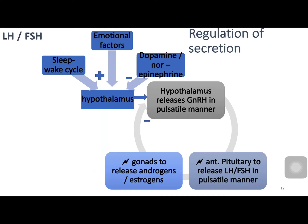Now coming to gonadotropins. Gonadotropins released from the anterior pituitary are two: luteinizing hormone and follicle stimulating hormone. These are polypeptides released from gonadotrophs. Emotional factors and the sleep-wake cycle in the form of circadian rhythms stimulate neurosecretory cells in the hypothalamus, increasing the release of gonadotropin releasing hormone in a pulsatile manner, which promotes production of LH and FSH — also in a pulsatile manner — from the anterior pituitary, causing release of androgen and estrogen. These hormones have inhibitory influence on the hypothalamus to reduce gonadotropin release.